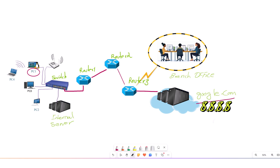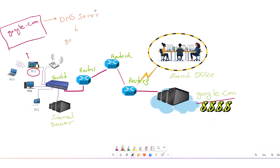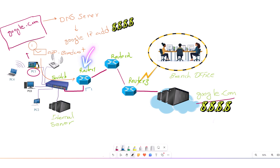In the second scenario, if both computers are on different networks — say PC1 wants to open google.com — PC1 opens the browser and types google.com. The DNS server converts that name into an IP address. PC1 checks and finds this IP address is not on the same network, so it will send an ARP broadcast message to find the default gateway's MAC address.